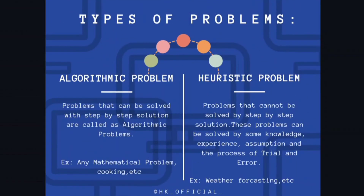Now a very important part — types of problems. There are two types of problems: algorithmic problems and heuristic problems. Problems that can be solved with a step-by-step solution are called algorithmic problems. For example, any mathematical problem, cooking, etc. Heuristic problems are problems that cannot be solved by a step-by-step solution. These problems can be solved by some knowledge, experience, assumption, and the process of trial and error. For example, weather forecasting, etc.